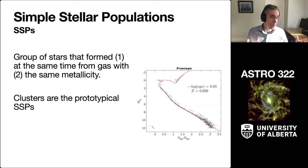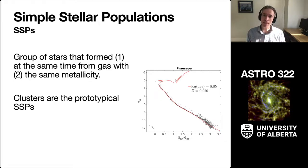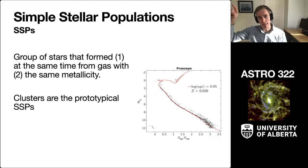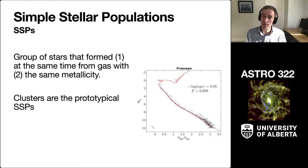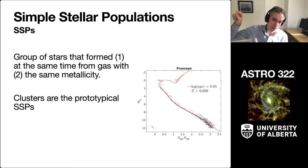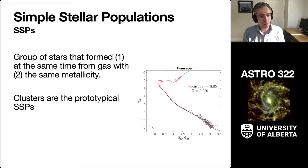These look a lot like the evolutionary tracks I showed you earlier this week, but they are all the same age — similar but not quite the same thing. An evolutionary track follows one star over the course of time; this is a whole bunch of stars at a fixed time. The reason we care about simple stellar populations is that clusters are the prototypical simple stellar populations — we think all the stars in a cluster formed at the same time with the same metallicity. There's an asterisk on this because we sometimes see multiple populations inside clusters.